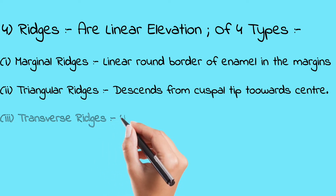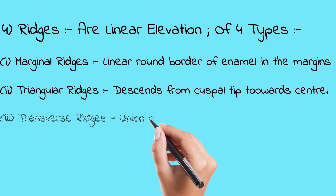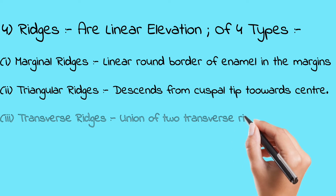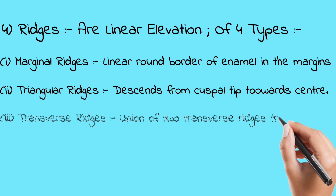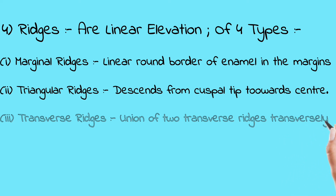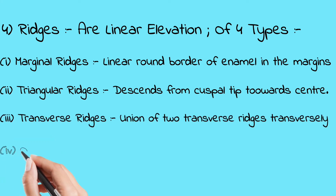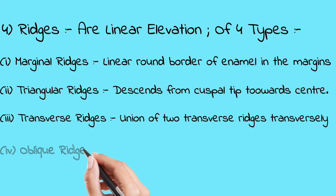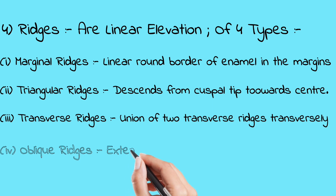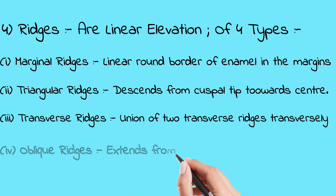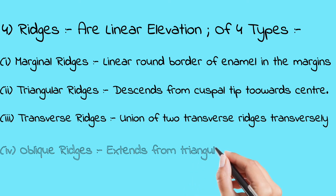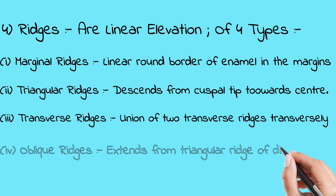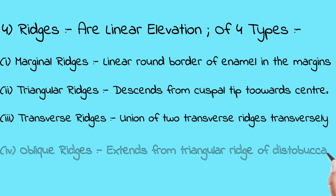The oblique ridge is very important for viva questions — it is the most frequently asked topic. Oblique ridges extend from the triangular ridge of the distobuccal cusp to the distal cusp of the mesiолingual cusp of maxillary molars only. It is very important to know that oblique ridges are present only in maxillary molars.